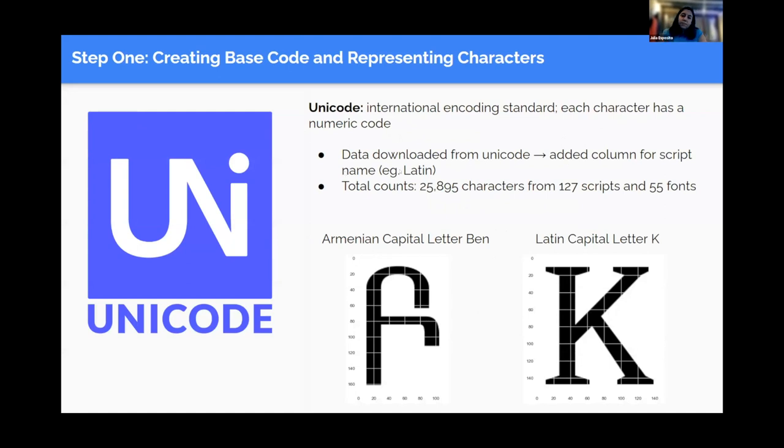Step number one, creating base code and representing these characters. We used Unicode, which is international encoding standard where each character has a numeric code. When you have a font, the fonts will draw these characters based on these numeric codes. The only thing is not all fonts support all characters, so we did have to work around that. When we finished and came up with our final data frame of characters, we had 25,895 characters from 127 scripts and 55 fonts. And we created images for each of these characters, as you can see on this slide. You have the letter K and the Armenian capital letter Ben.